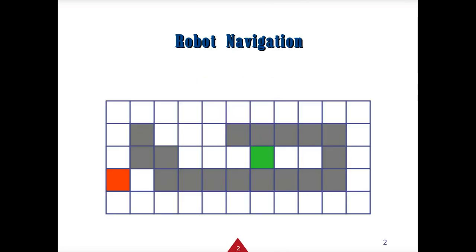The idea behind Blind Search is you have an initial start point, represented by the red block, and then a goal state — a goal node — and you try to find the quickest path there. What Blind Search uses is you don't know the cost of going each way, so you might not get an optimal search distance.